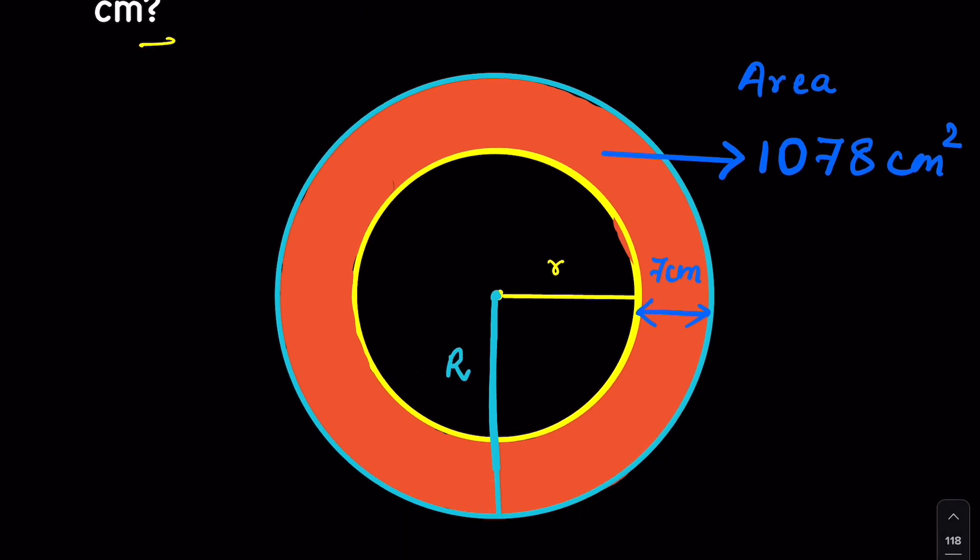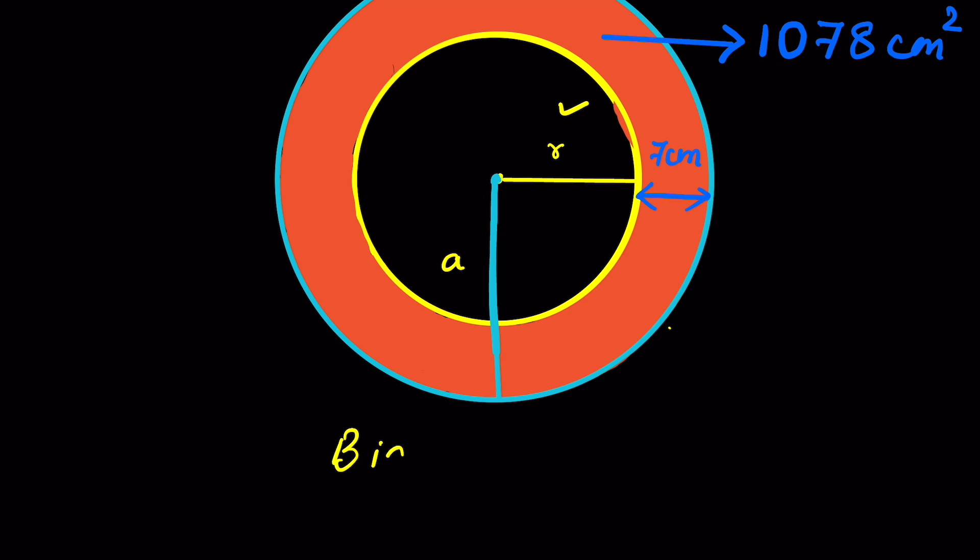So this is the picture here and this picture is not true to scale, just for representation. This is the bigger circle with radius r and this is the smaller circle with radius r in lower case. To remove the confusion, let's say the bigger circle radius is equal to a and smaller circle radius is b.